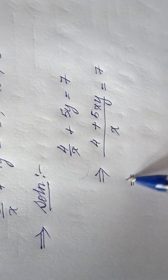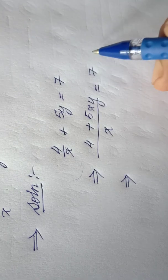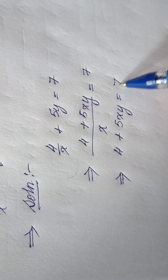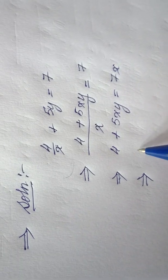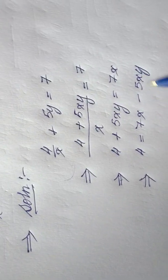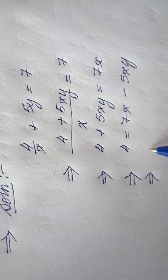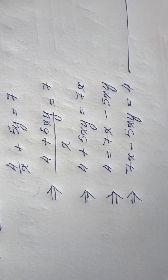Moving x to the right-hand side — since it is in the denominator it becomes a multiplier — we get 4 + 5xy = 7x. Transferring 5xy to the right-hand side gives us 4 = 7x − 5xy. Swapping sides, this becomes equation 1: 7x − 5xy = 4.